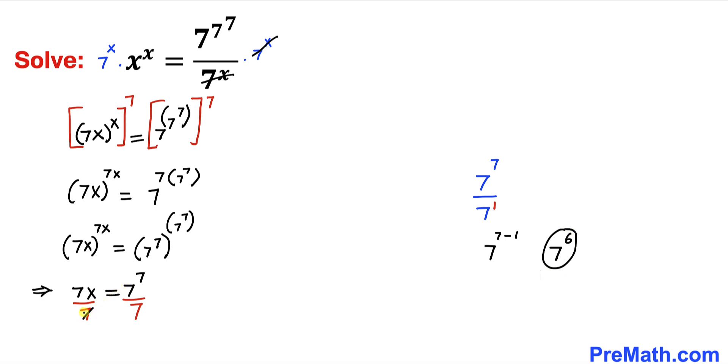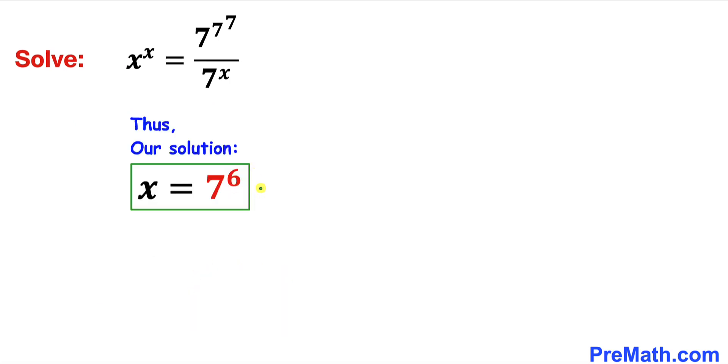On the left hand side, 7 and 7 cancel out, so we end up with x equal to 7^7 divided by 7, which is the same as 7^6. That is our solution. Thus our solution turns out to be 7^6 which equals 117,649.